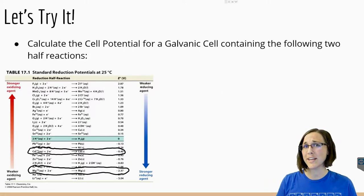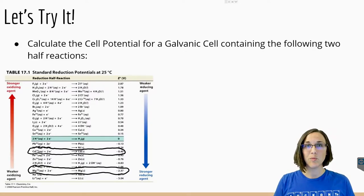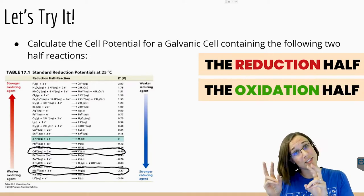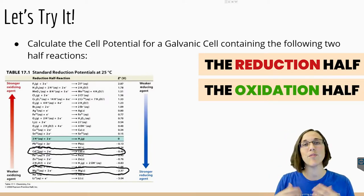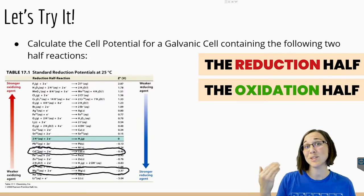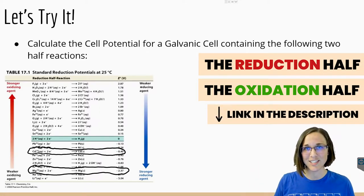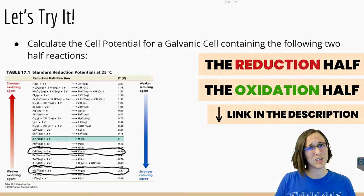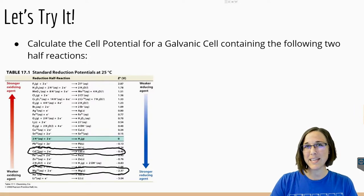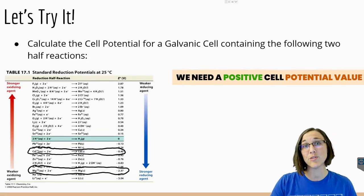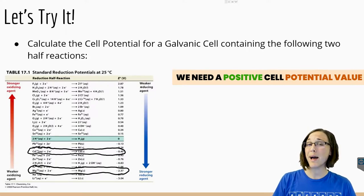The objective here when we're trying to calculate for cell potential between two different metals — one of which has to play the reduction half and the other has to play the oxidation half, from the half reactions lesson we just previously learned — is that we want to add those together to yield a positive overall cell potential value. So we want positive voltage, in other words.